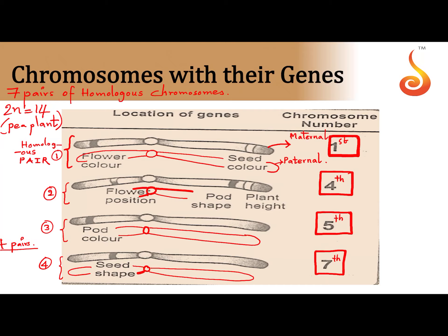Notice how the first homologous pair has the gene for both the color of the flower as well as the seed color — it will obviously be there on the corresponding member also. So in the first homologous pair, the genes for flower color and seed color are present. In the fourth homologous pair, there is a gene for flower position, gene for pod shape, and plant height. Notice how the genes for pod shape and plant height are present pretty close to each other. When two different genes are located on the same chromosome, we call it linkage — so the genes for flower position, pod shape, and plant height are linked.